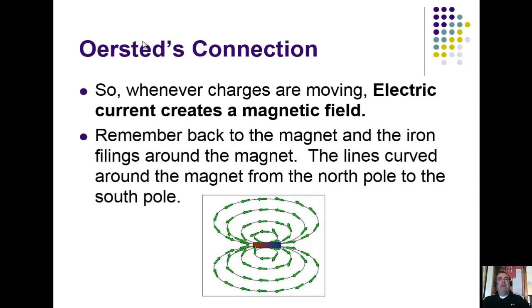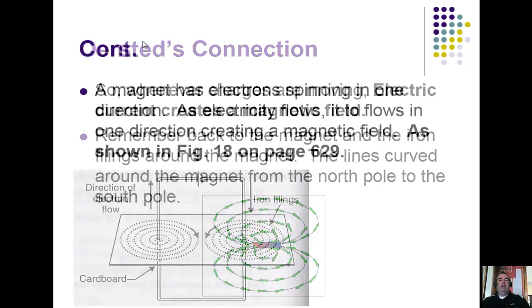Remember back to the magnet and the iron filings around a magnet. The lines curved around the magnet from the north pole to the south pole. When electricity flows, it's going in a certain pattern. Just like when we talked about the domains of a magnet, they were lined up also. Charges flowing in a certain direction created a slight magnetic field.